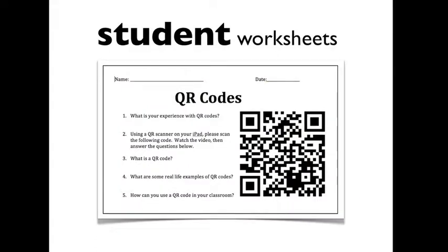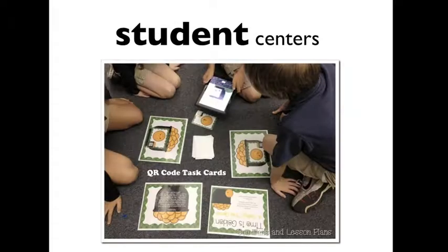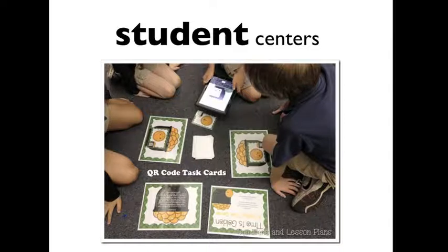Another option is to actually embed QR codes onto student worksheets. There might be a sample problem where you are showing a video on how to solve it — they scan the code and it shows them the video, and as they're watching they can answer questions alongside it. At the elementary level and student centers, this works great with QR task cards, where each card has a QR code and kids scan it to get the directions of what they need to do at that center.